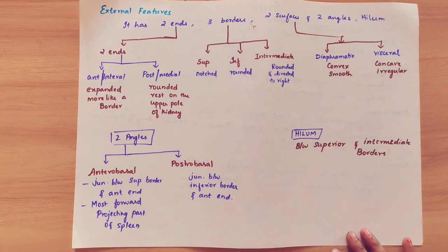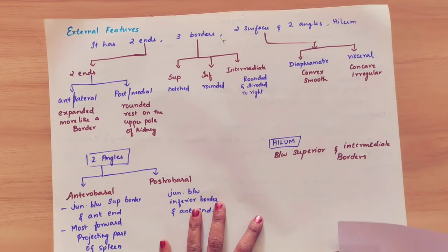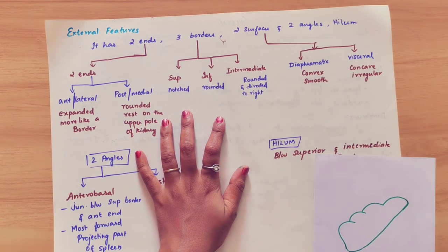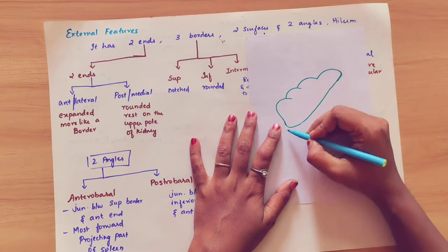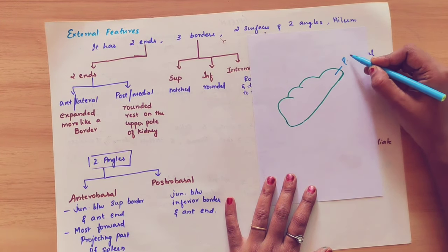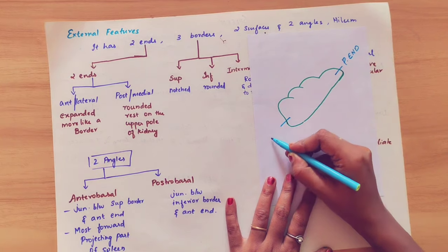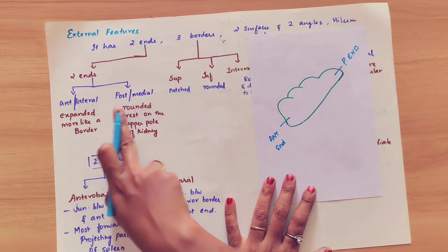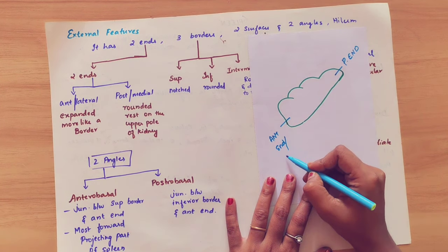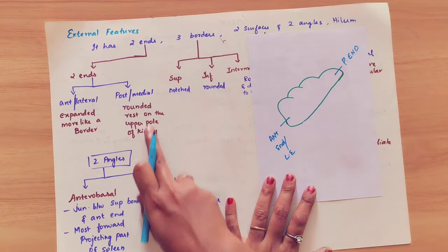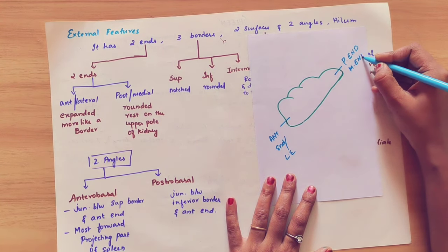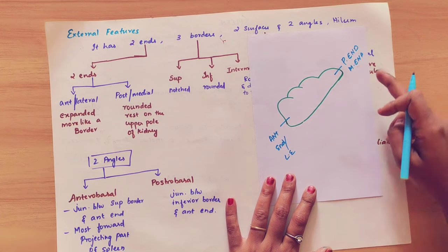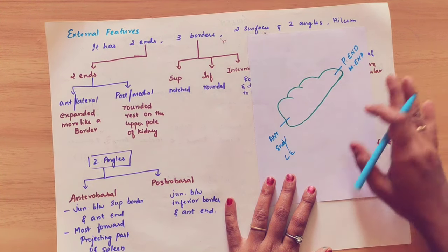Coming to the external features of the spleen. It has two ends, three borders, two surfaces, and two angles, plus a hilum. Looking at the spleen diagram: this is the posterior end and this is the anterior end. The anterior end is also known as the lateral end; the posterior end is also known as the medial end.